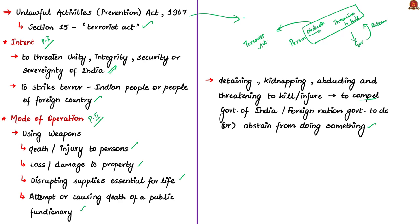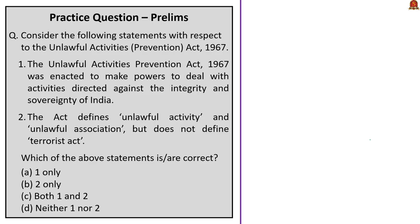Earlier on May 25, 2019, we discussed this Unlawful Activities Prevention Act of 1967 with respect to what is unlawful activity, what is meant by unlawful association, and also about the Unlawful Activities Tribunal. The link of that article discussion is provided in the description box. Have a look at the practice prelims question. Let us move on to the next news article.